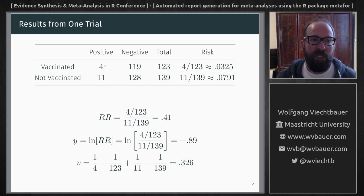So we have four TB cases in the vaccinated group out of 123 people, 11 cases in the not vaccinated group out of 139 cases.